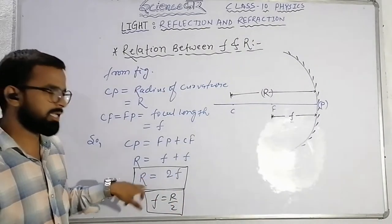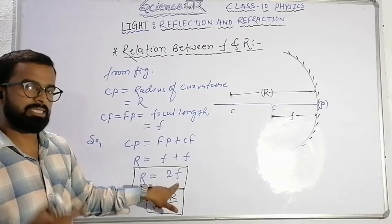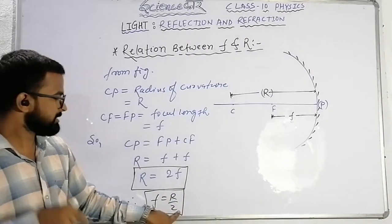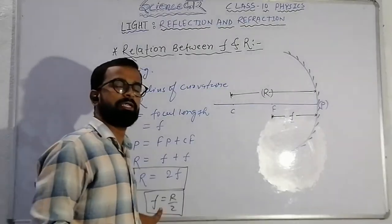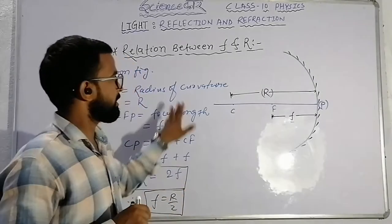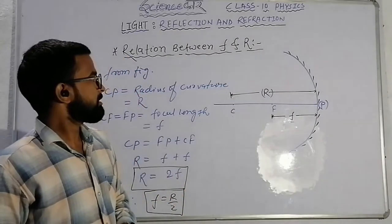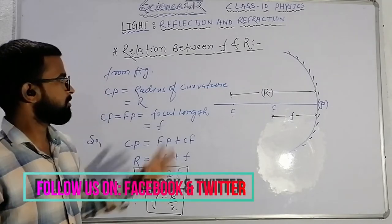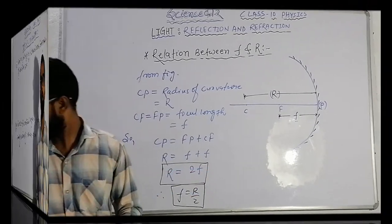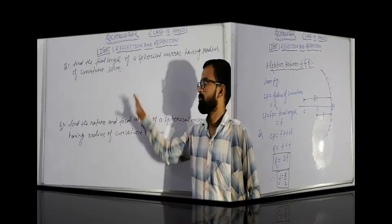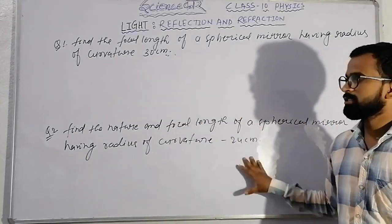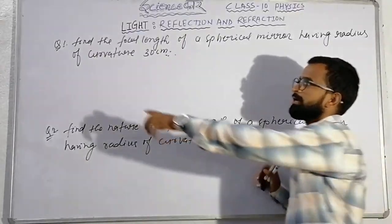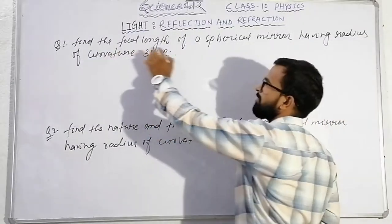So this is the relation of focal length and radius of curvature: R is equal to 2f, which means f is equal to R by 2. That means the focal length is half of the radius of curvature. This is the basis of the relation between f and R.